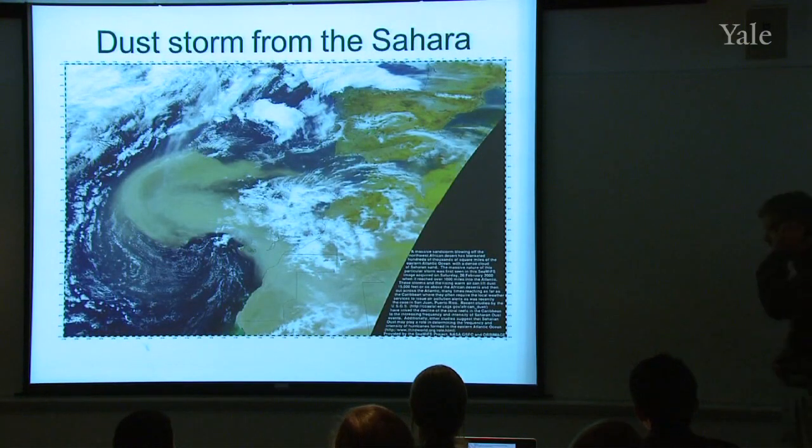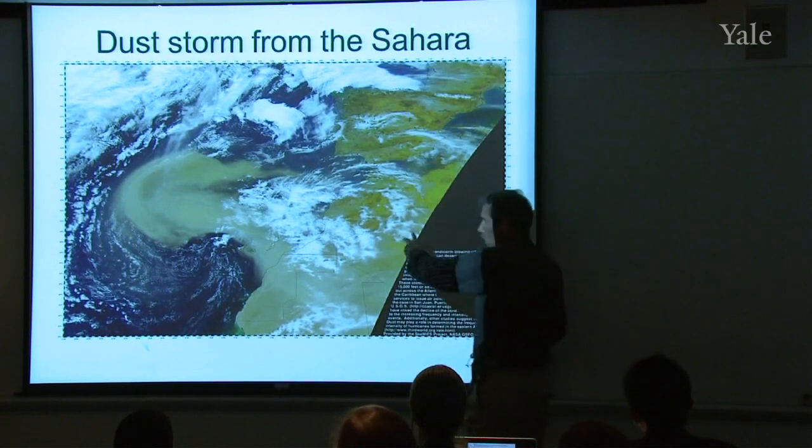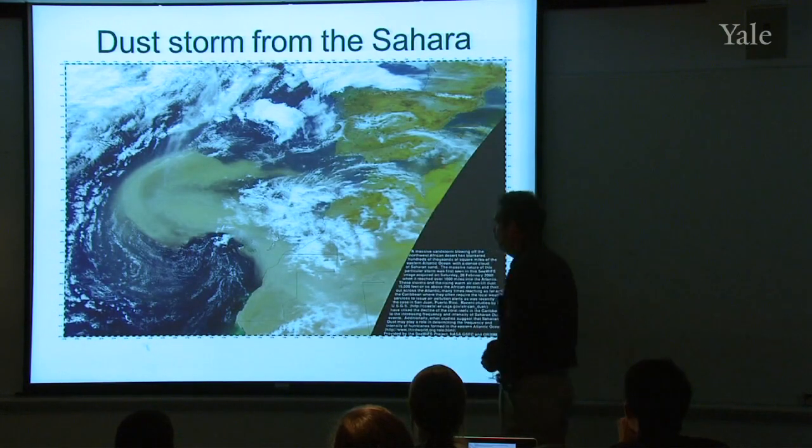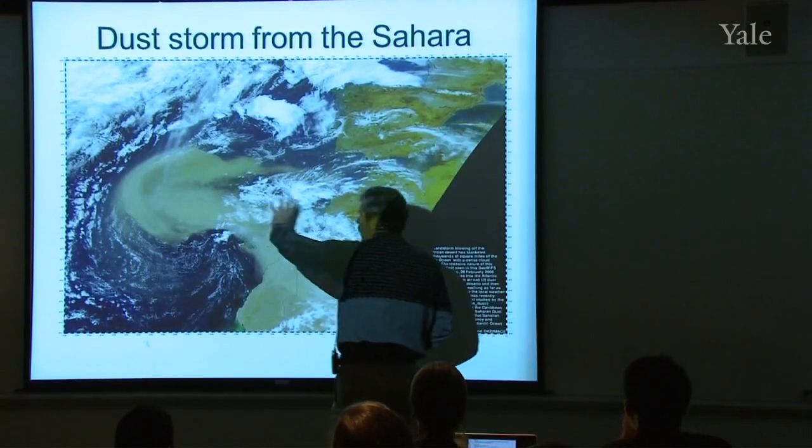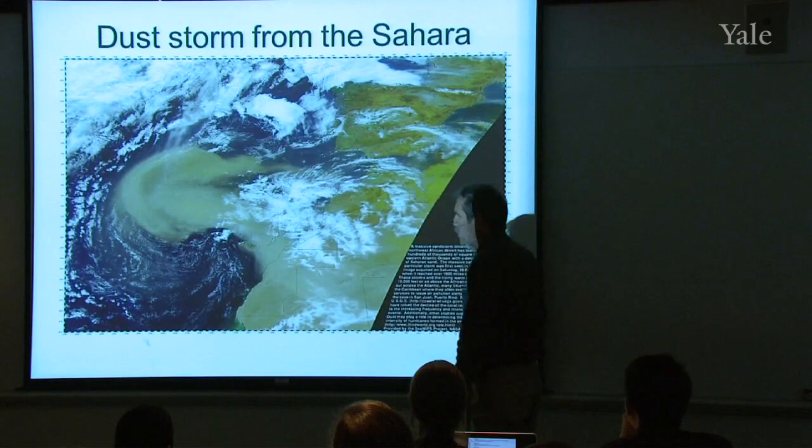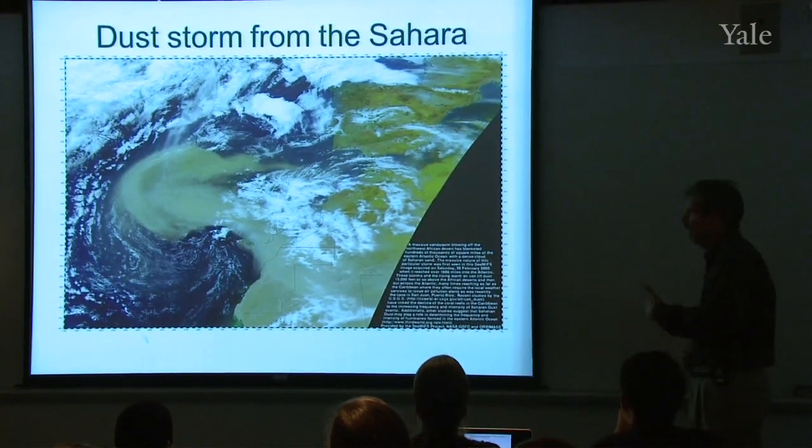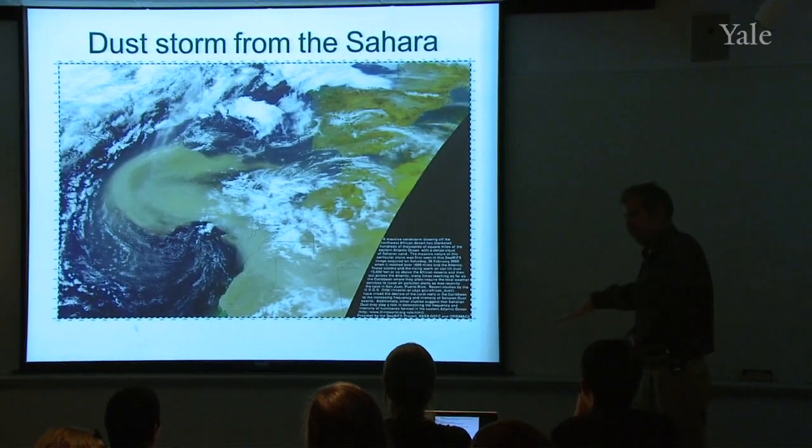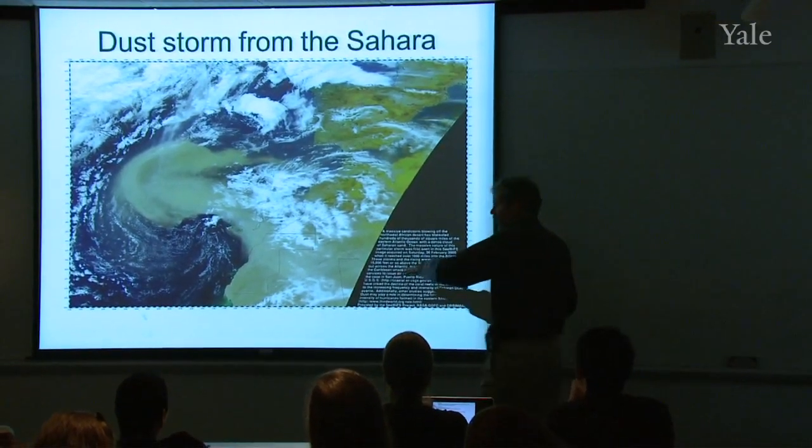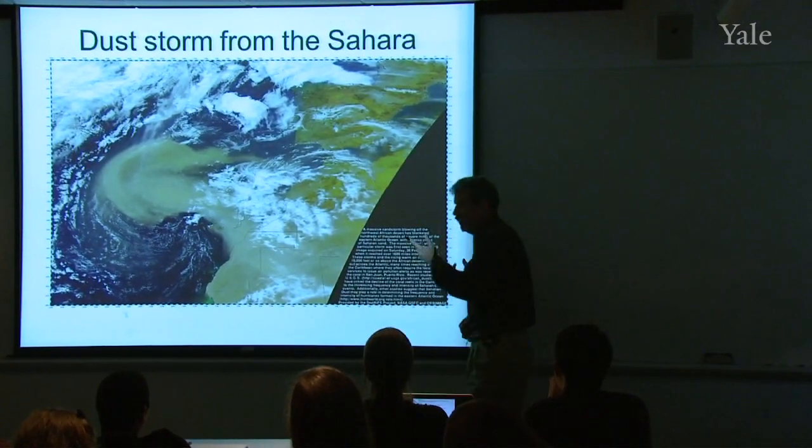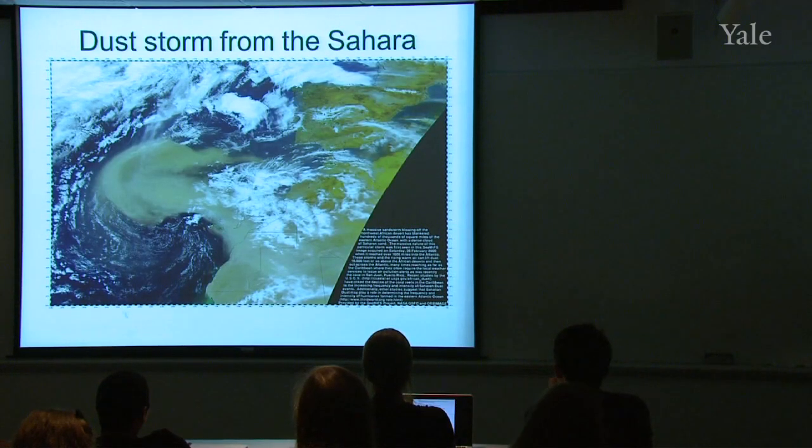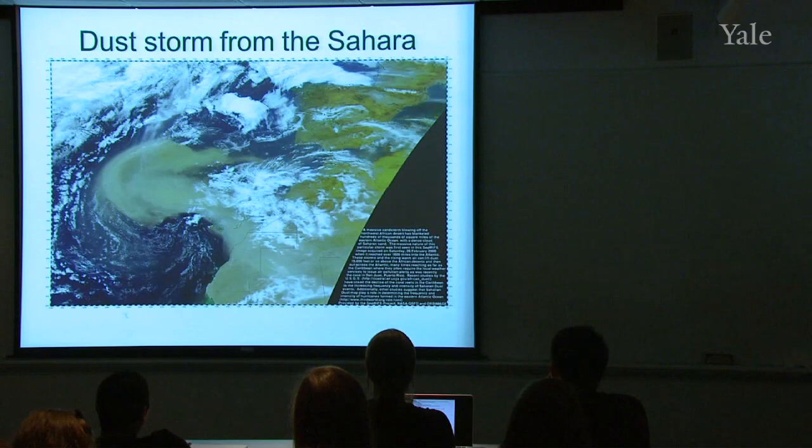Sandstorms can do similar things. The winds can pick up. This is off the west coast of Africa. The wind has picked up some dust off the Sahara Desert and carried it out over the ocean. And turbulence is keeping it aloft. Eventually, gravitational settling will make that stuff fall back onto the ocean surface.